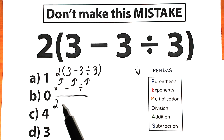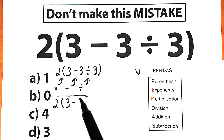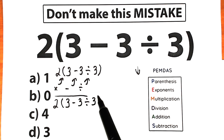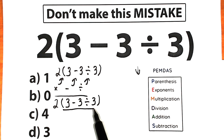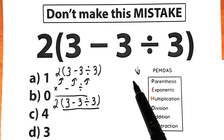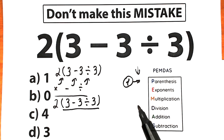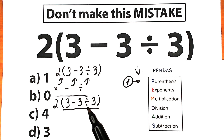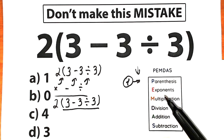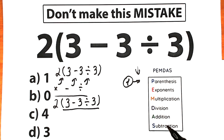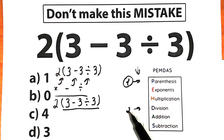Let's solve our challenge according to PEMDAS. We have 2 times, open parenthesis, 3 minus 3 dividing by 3. Let's scan our challenge — we have parentheses right here. Parentheses have the highest priority, so our first step is to evaluate the expression inside the parentheses. Inside the parentheses we have a division sign and a subtraction sign. Division has a higher position than subtraction, so our second step is division.